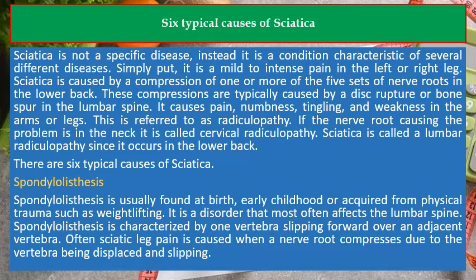It causes pain, numbness, tingling, and weakness in the arms or legs. This is referred to as radiculopathy. If the nerve root causing the problem is in the neck, it is called cervical radiculopathy. Sciatica is called a lumbar radiculopathy since it occurs in the lower back.